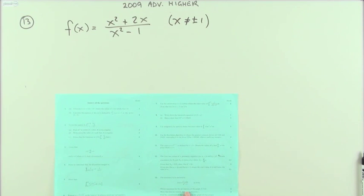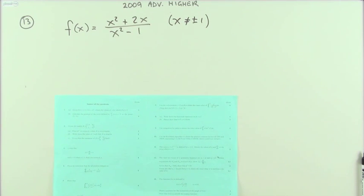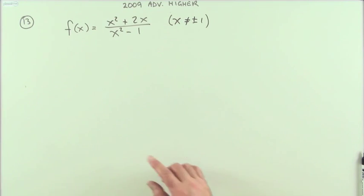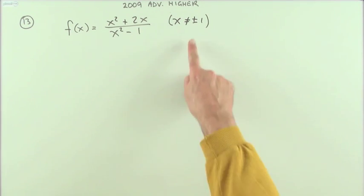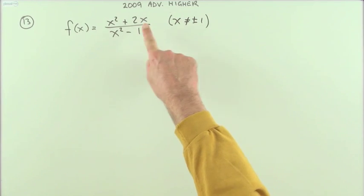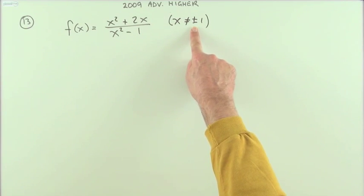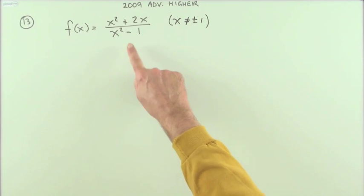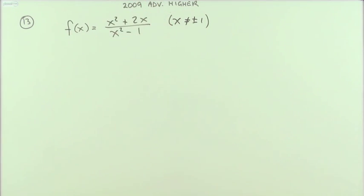First part then, obtain the equations for the asymptotes for three marks. Now there's no mention of how it approaches them, so that won't be necessary. Vertical asymptote, straight away, that little disclaimer for the validity of this function means x can't be plus or minus 1, because then you'd be dividing by 0 and shooting off to infinity, so there's an asymptote straight away.